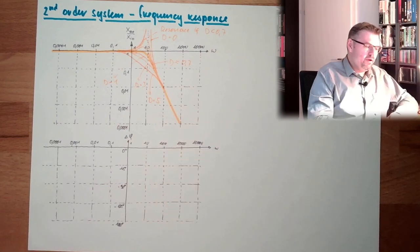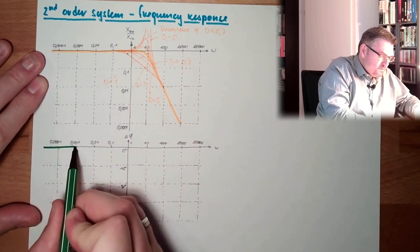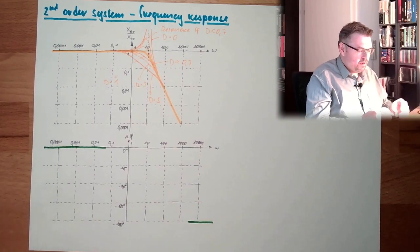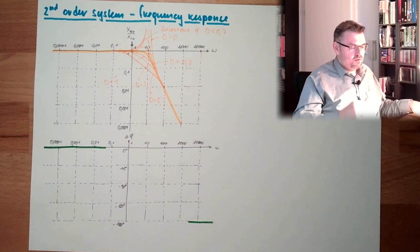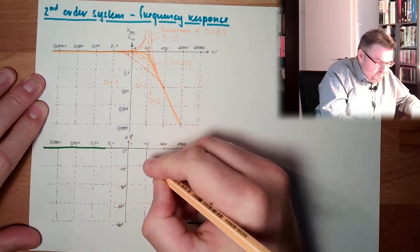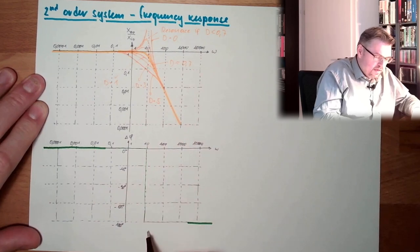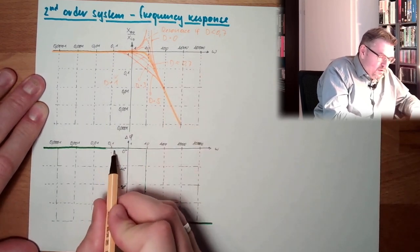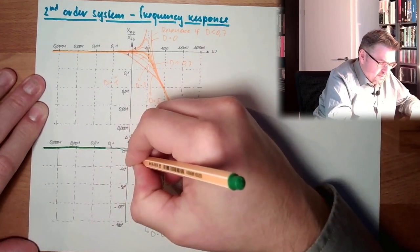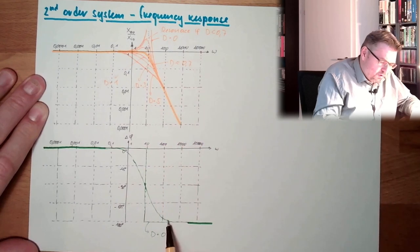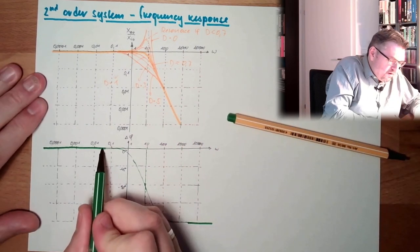For the phase, we will start at 0 again. One thing is certain: we will end up at minus 180 degrees — that is the maximum phase shift of a second order system. If we have damping 0, we change immediately at the natural frequency and stay there. In the case of damping 0.7, we change somewhere around the nominal frequency, reaching minus 90 degrees at the nominal frequency, then going down to minus 180.